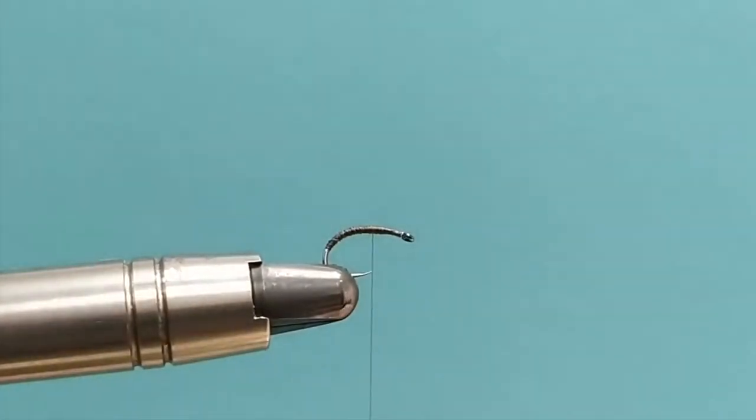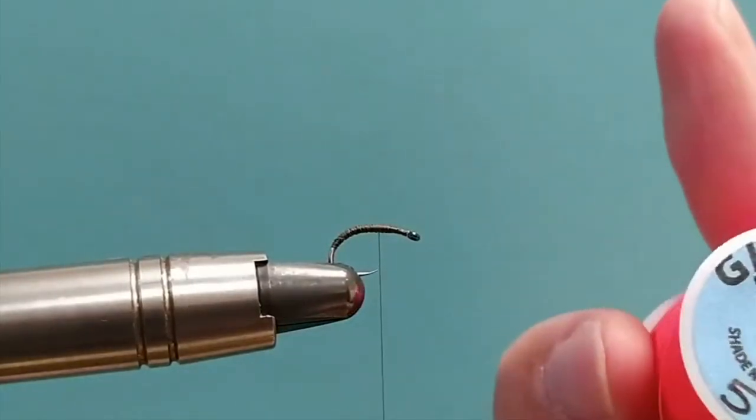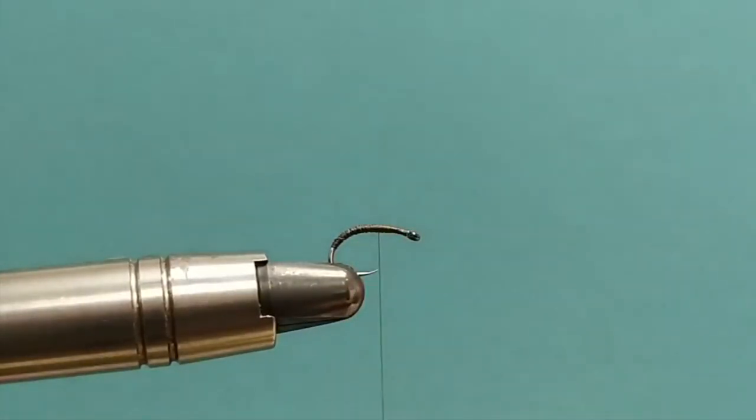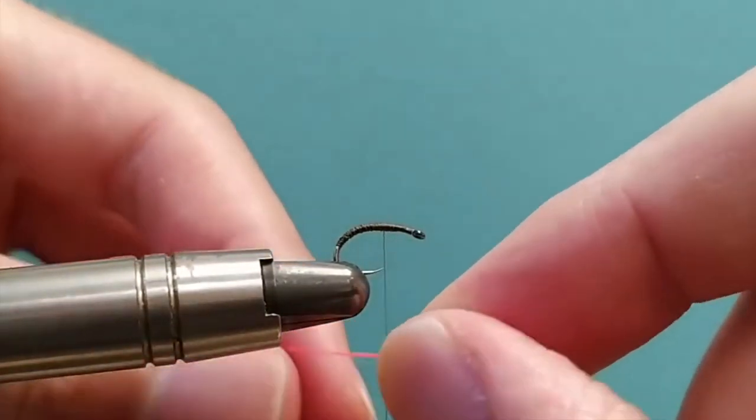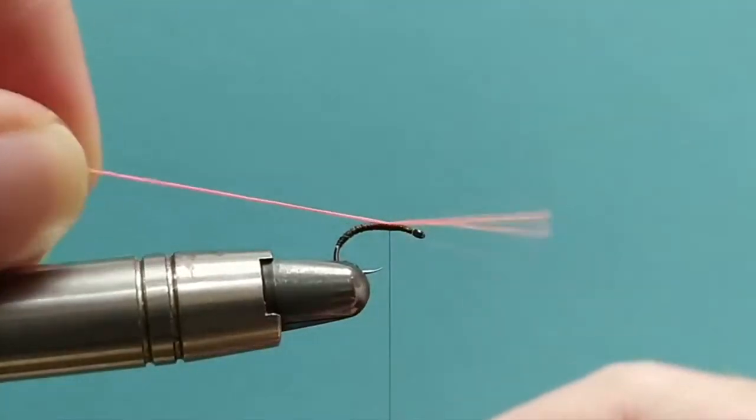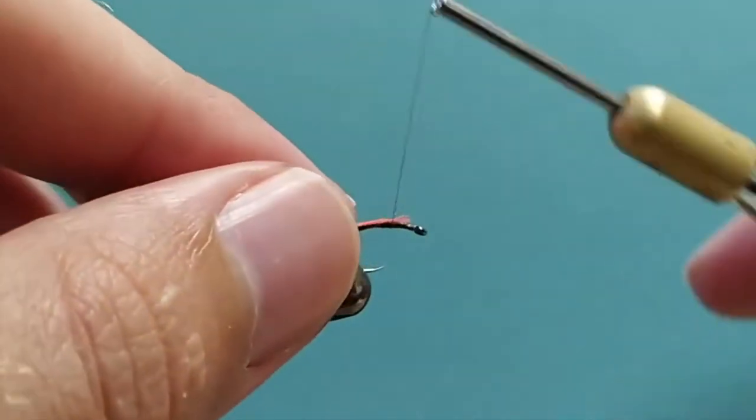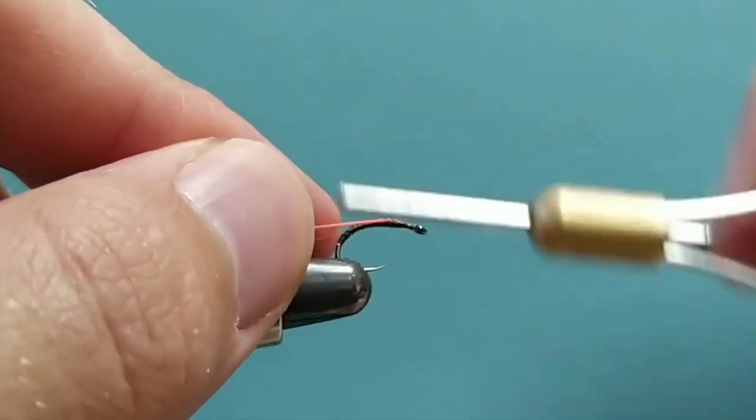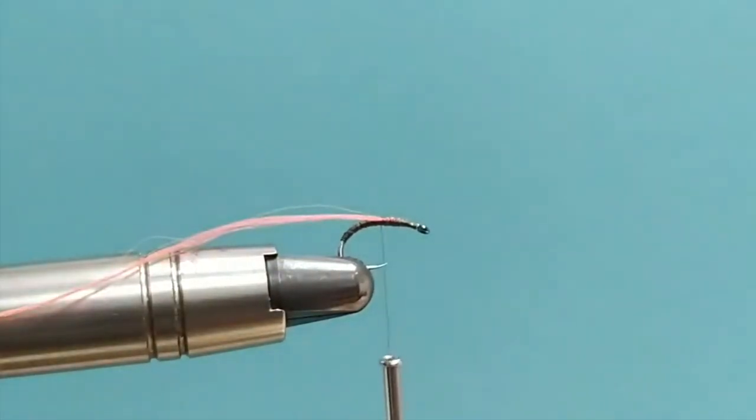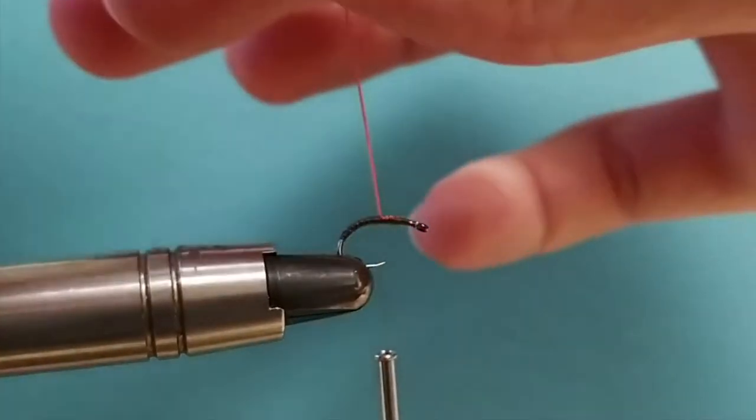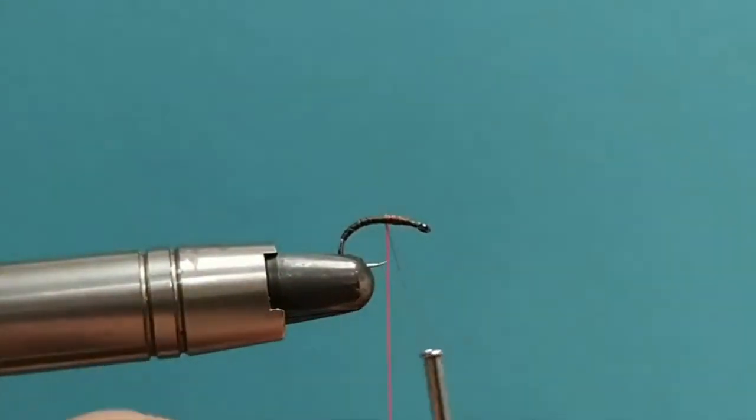I'm then going to tie in a hot spot using this glow bright number five, my favorite color for hot spots. I prefer the five to the four. This is a hot orange compared to number four which is a red. I've just caught that in, bringing it around the back of the hook, and then I can tie that in with a couple of extra turns. Take the thread so it's in line with the point, and that's where I'm going to start my hot spot. I'm then going to spin my floss to make it tighter and easier to work with.